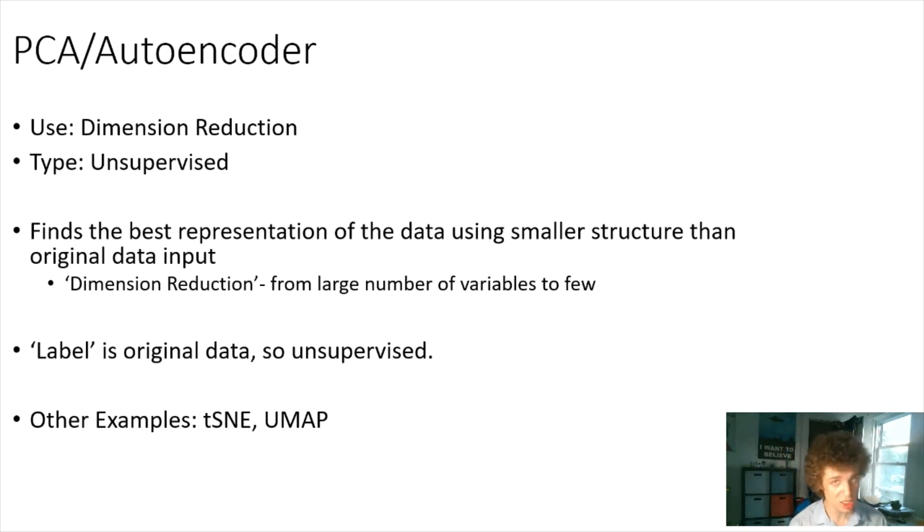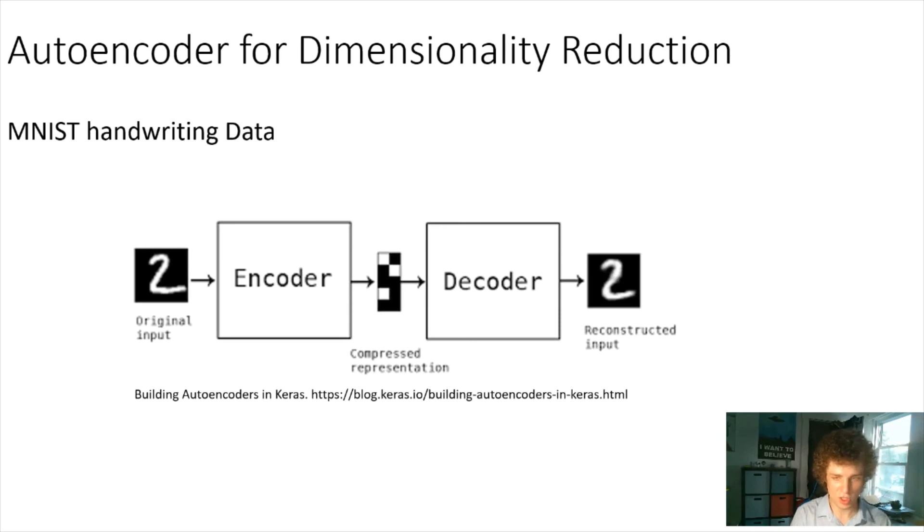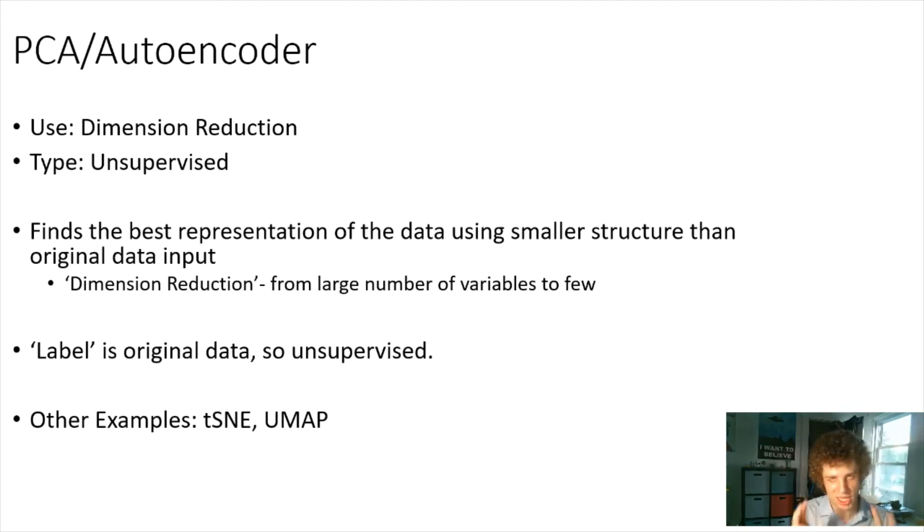There's two examples: PCA and autoencoders. These are considered unsupervised because even though they're labeled on themselves, the way these neural networks train is because the label is just the original input image. Even though they are labeled with themselves, it is just themselves, so it is unsupervised. Other examples would be t-SNE or UMAP.